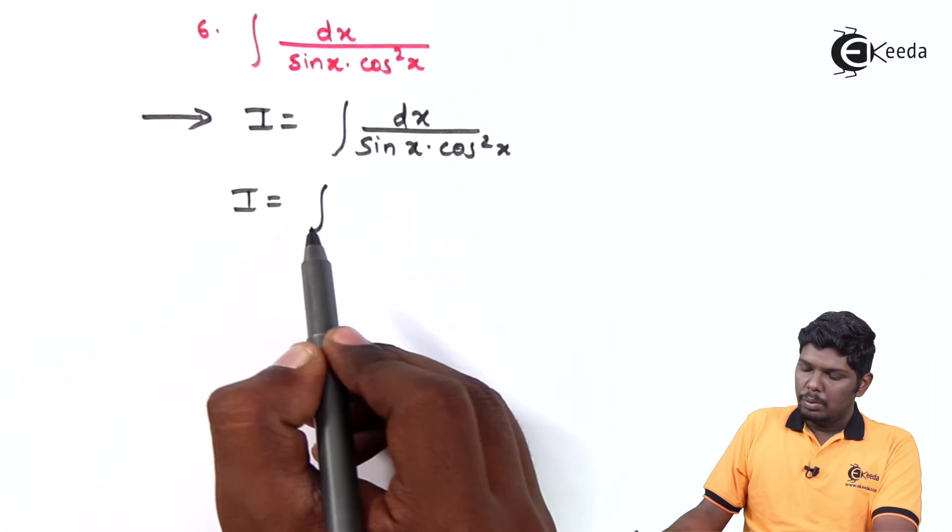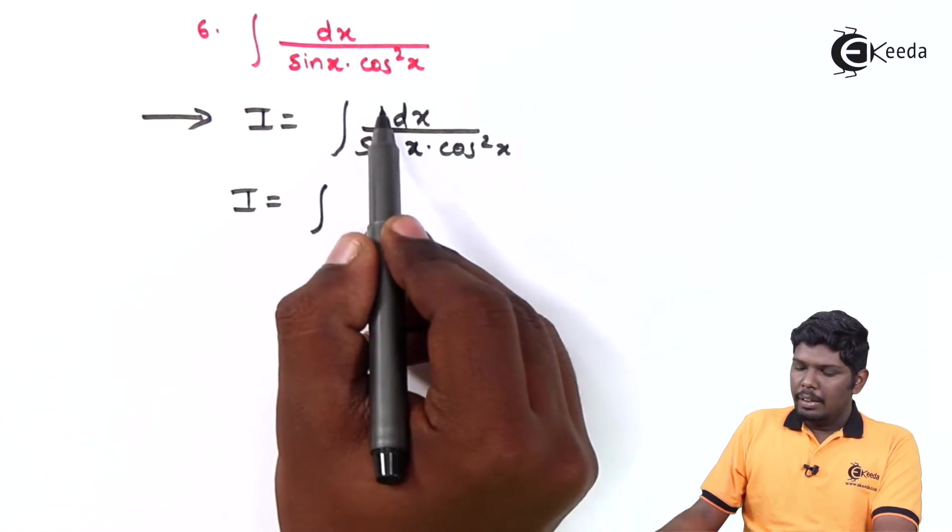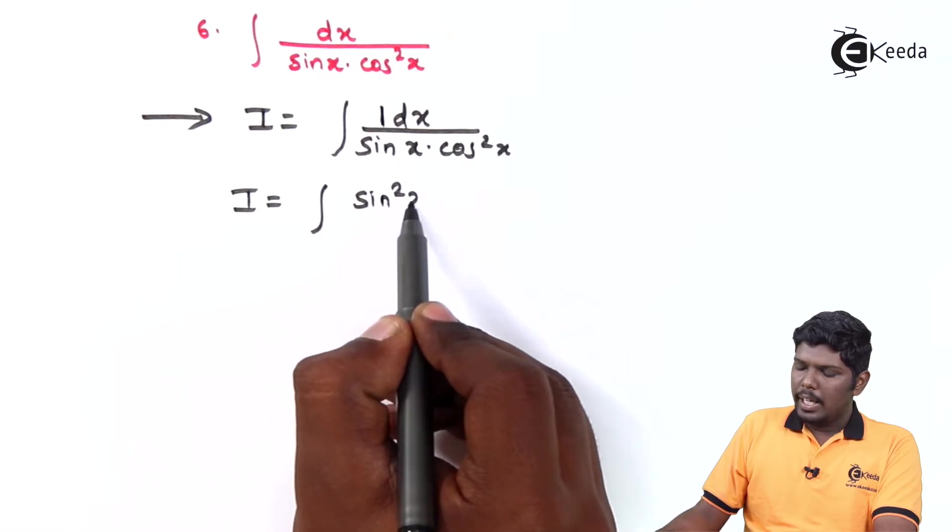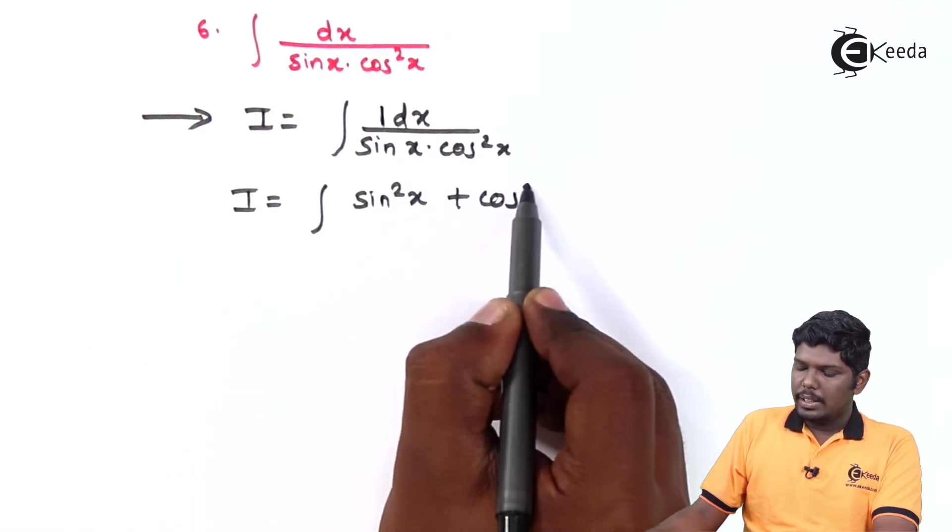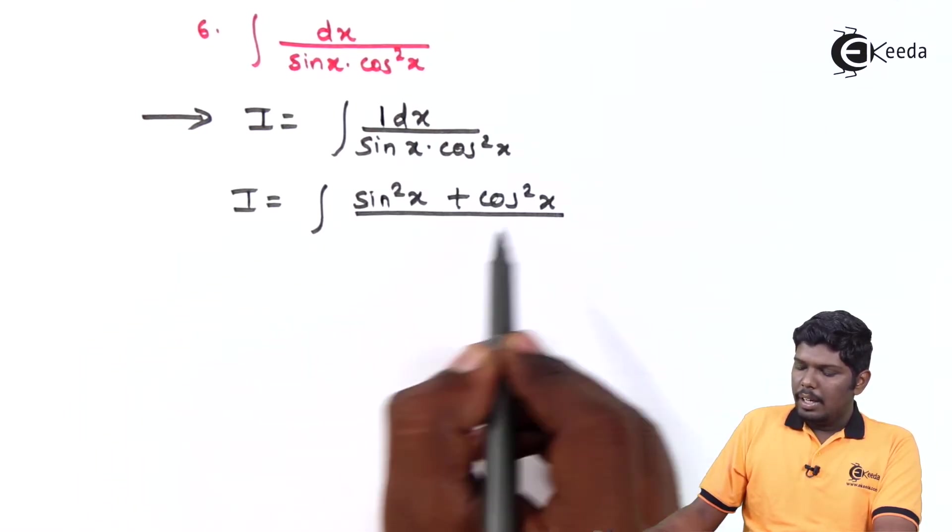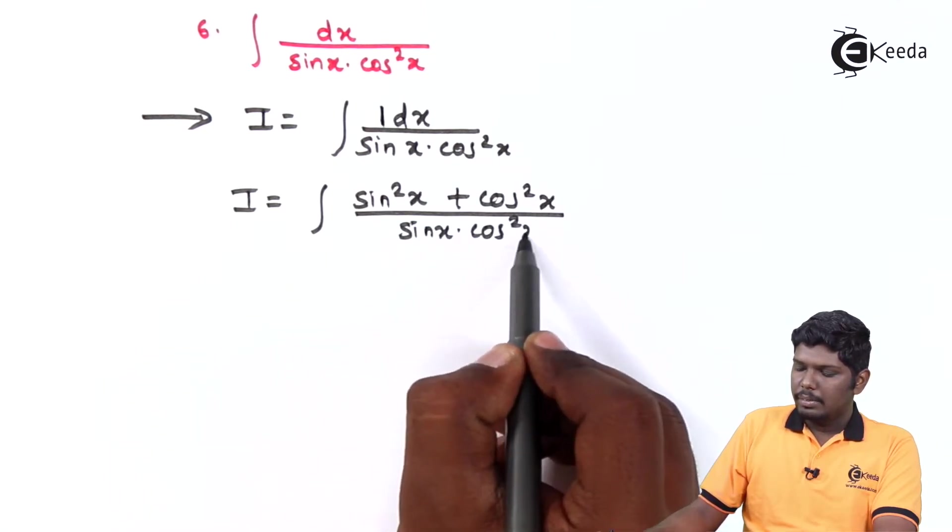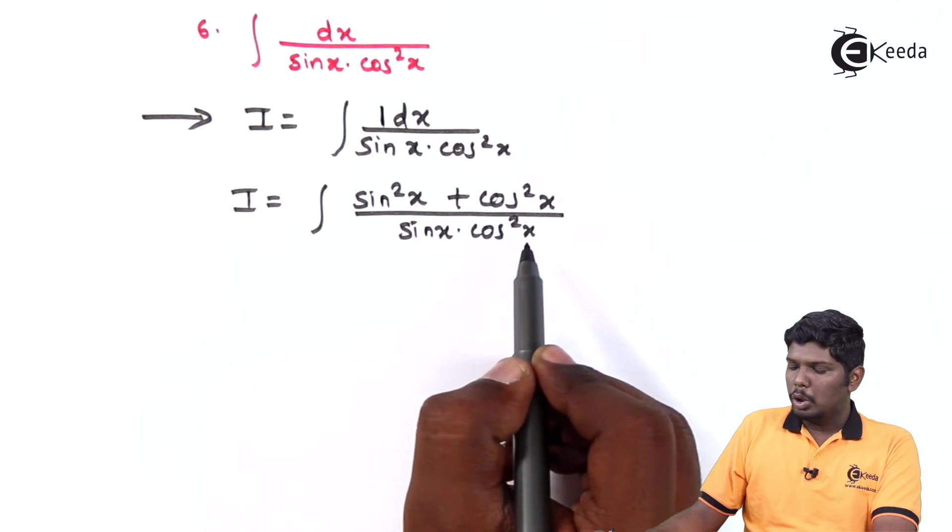Therefore, I is equal to, in the numerator, we have 1 and that 1 can be written as sin square x plus cos square x divided by sin x into cos square x dx.